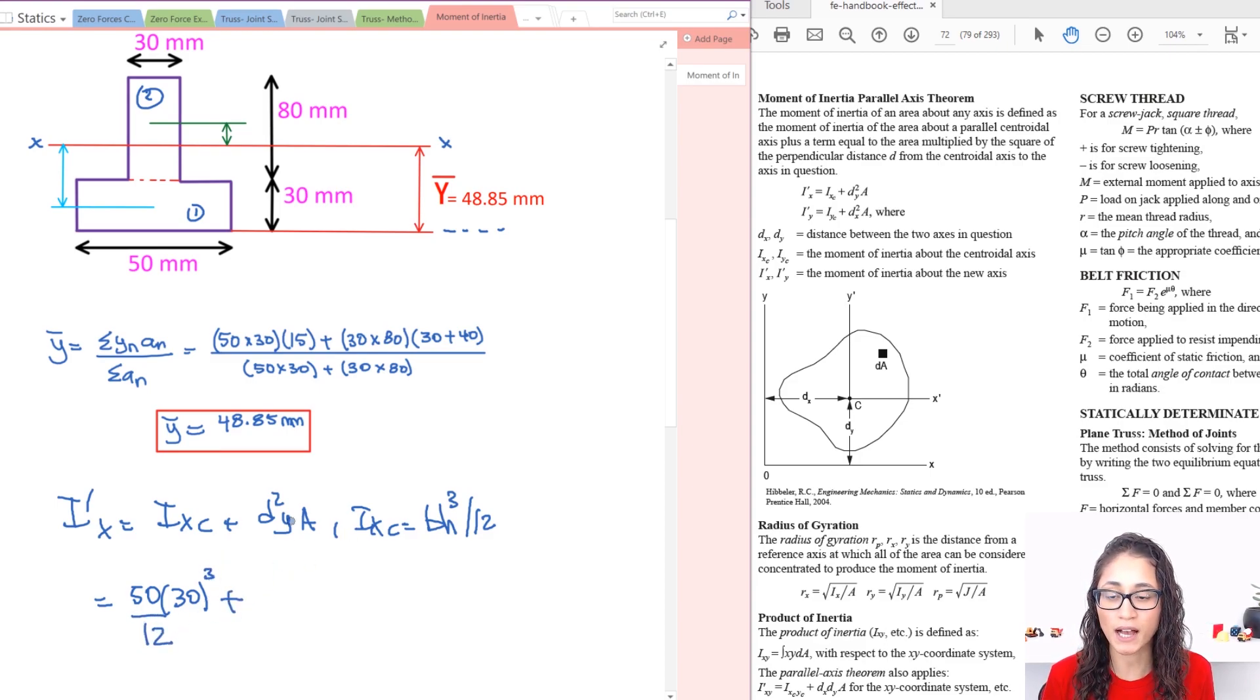And then we have d squared y times a. So I'm going to actually start with the area because it's easier, and I'm going to explain this distance right here, what it means. You take the centroid of the part you're dealing with to the centroid of the whole shape that we calculated in the previous video. So it's this distance right here. So this is my dy1, centroid of this part, which we said this is going to be 15, and then this is from here to here, that's my y-bar.